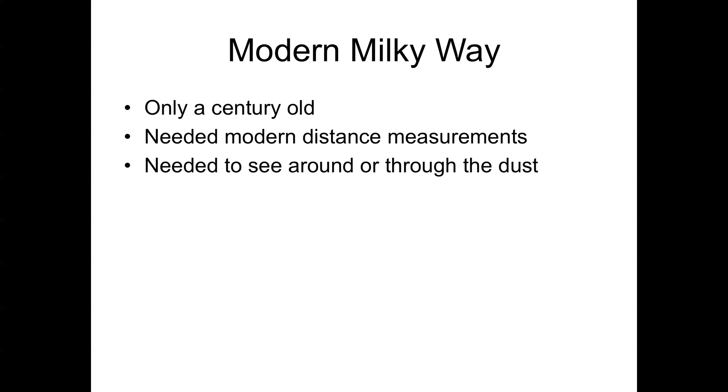The modern Milky Way dates back to the early 1900s, and we'll talk today about how that discovery was made. It needed modern distance measurements and a way to see around or through the dust in order to get a full picture of what the Milky Way looks like, since the sun sits in the plane of the galaxy, and that plane is clouded up with molecular clouds that contain both gas and dust that obscure the galaxy behind them.